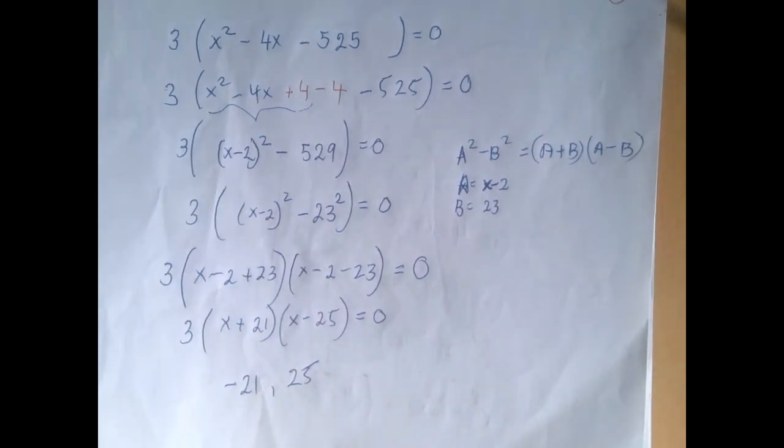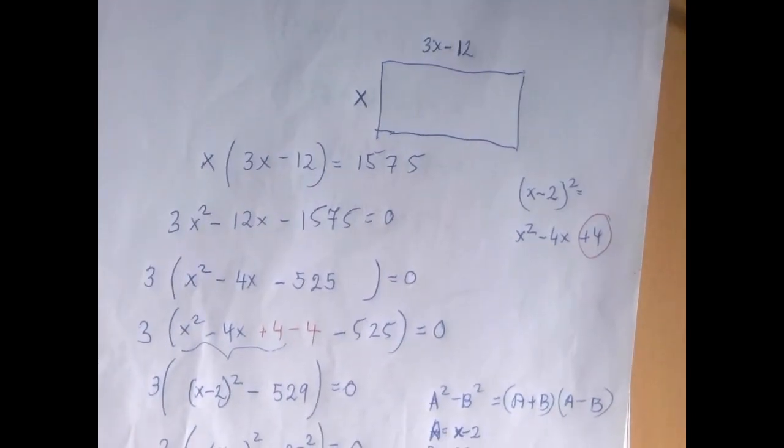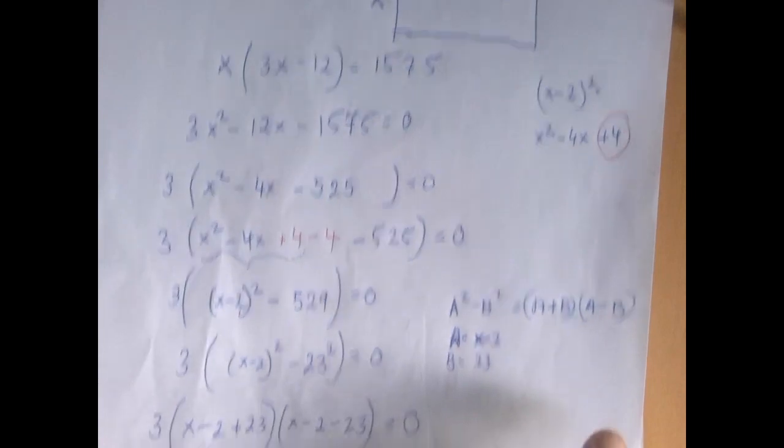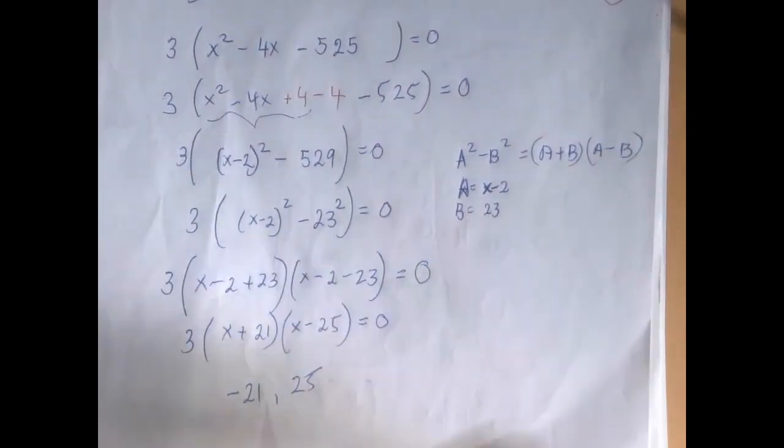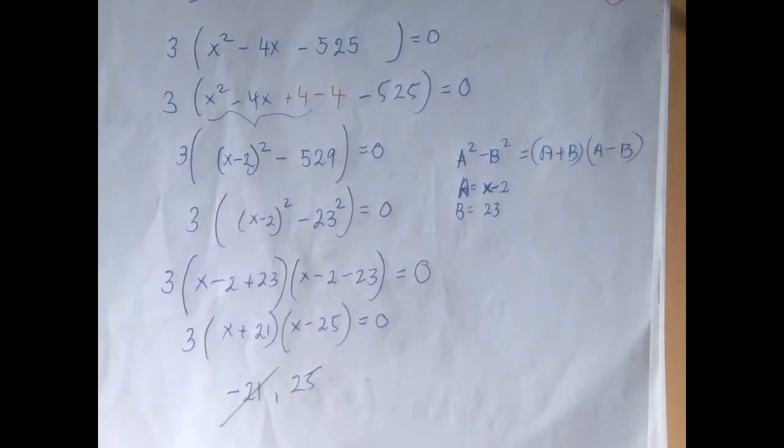But we should remember that no one gave us an equation. We're in the middle of a word problem, right? If we go back and remind ourselves that x represented a distance, that means that negative 21 is out of question. Negative 21 cannot play the role of a side because it's negative. And that kind of takes care of the most interesting and most difficult part in these quadratic word problems is figuring out which one doesn't work.